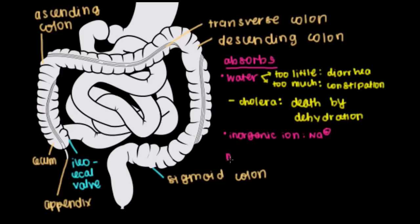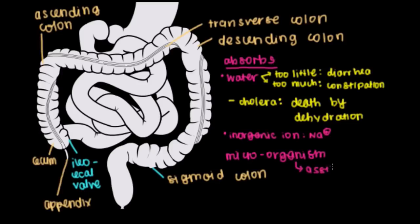Another interesting thing about the large intestine is that it's a rich source of microorganisms — like bacteria. The question might be: why do we have bacteria in our colon? Bacteria in our colon actually assist in the digestion of nutrients we're not able to digest ourselves because we lack those enzymes. They assist in digestion mostly of carbohydrates. About 5% of your stool at the end is actually composed of microorganisms like bacteria.